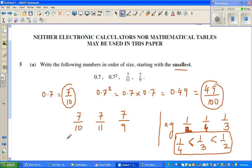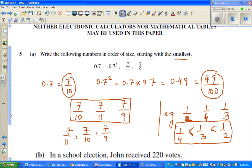So using that same logic, I can say, 7 eleventh is the smallest. I'm comparing only these three. 7 eleventh is the smallest. Then you have seven tenths, and then you have seven out of nine. We are not allowed to use a calculator. And then this is forty-nine out of hundred.